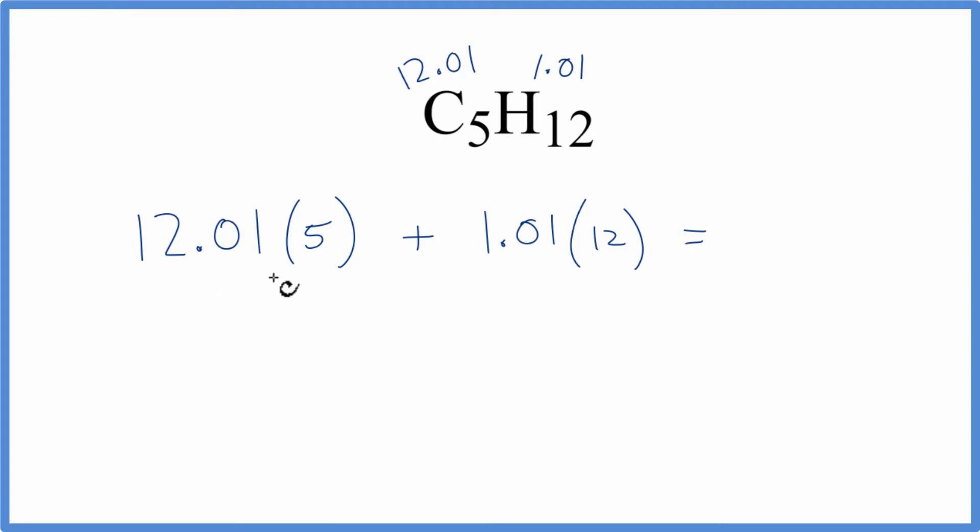We have 5 times 12.01 is 60.05 grams per mole, plus 12.12 grams per mole. Add them together, and you'll get the molar mass for C5H12. That's 72.17,